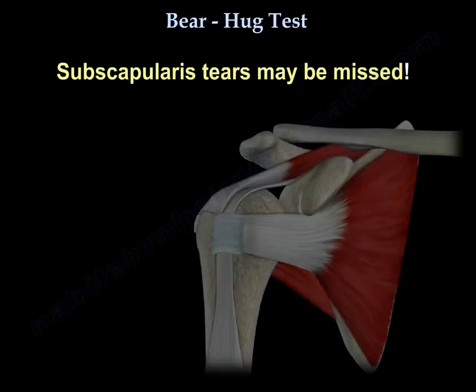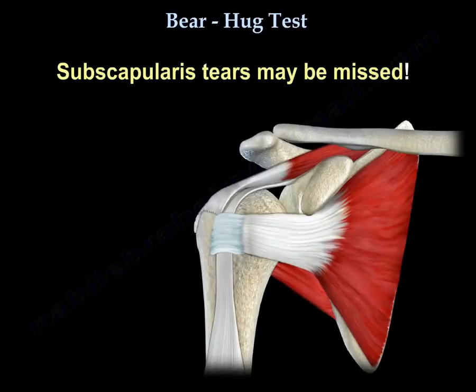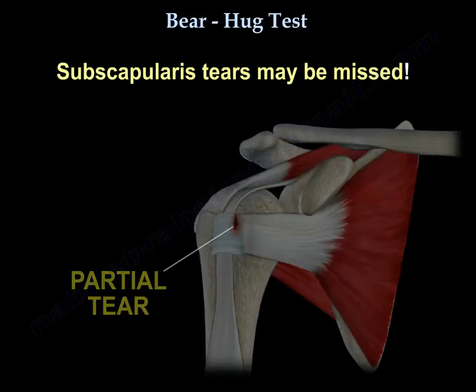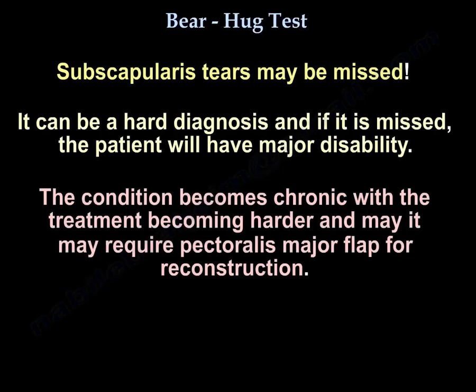A subscapularis tear could be missed — it can be a hard diagnosis. And if it is missed, the patient will have major disability. The condition becomes chronic and the treatment becomes harder, and it may require a pectoralis major flap for reconstruction.